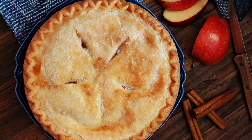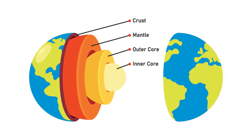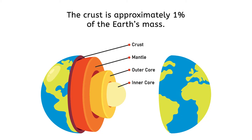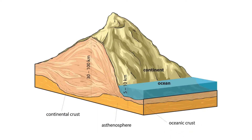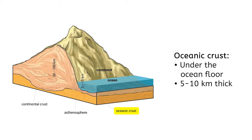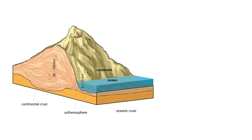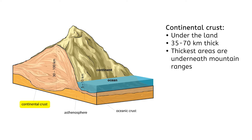Like the crust of a cherry pie, the crust of the earth is the outermost layer, and the layer that we live on. It is rigid and relatively thin compared to the rest of the earth, representing only one percent of the earth's mass. There are two sections of crust, the section under land, and the section under the ocean. Of these two types of crust, which do you think is thicker? Oceanic crust, or the crust under the ocean floor, is 5 to 10 kilometers thick, while the continental crust, or the crust under the land, ranges from 35 to 70 kilometers thick, with the thickest areas underneath mountain ranges. Now that we have explored the crust of our earth pie, let's move down a little further into the filling.